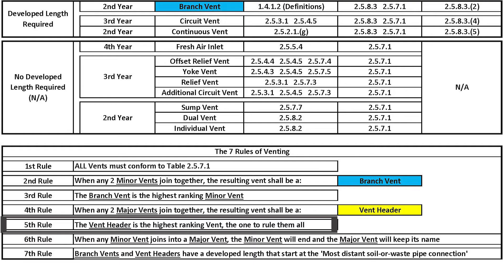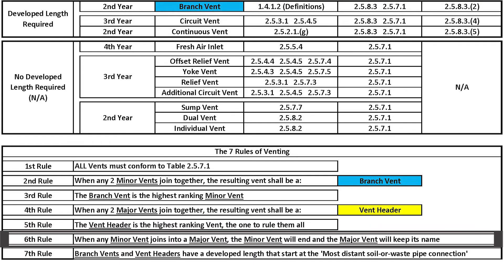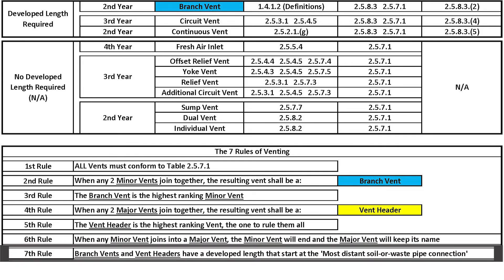Rule number five: the vent header is the highest ranking vent. Rule number six: when any minor vent joins into a major vent, the minor vent will end and the major vent will keep its name. Rule number seven: branch vents and vent headers are the only vents that have a developed length that starts at the most distant soil waste pipe connection.